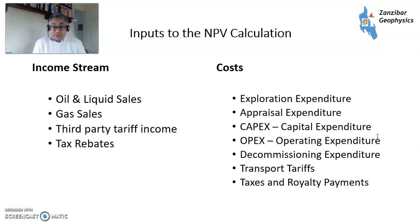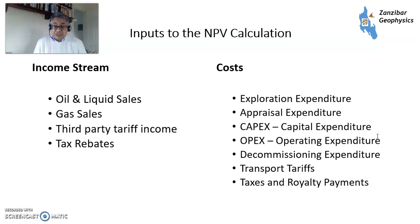There's also decommissioning expenditure, far forward into the future, where we clean up and remediate the site. Then any transport tariffs — if we have to pay tariffs to a third party for processing our hydrocarbons. And also taxes and royalty payments, depending on the different type of fiscal regime that the country we operate in has. I've got a video on that as well.